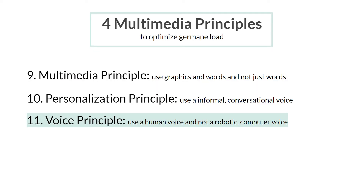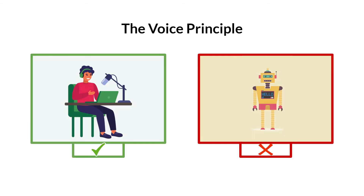Number eleven, the voice principle. People learn better when narration is spoken in a human voice rather than a computer voice. While there have been significant improvements with AI voices like Siri and Alexa, there is no substitution for a human voice. How to use this principle? Find a quiet space to record your narration. Consider using an external microphone instead of a built-in computer mic to ensure a high-quality recording.